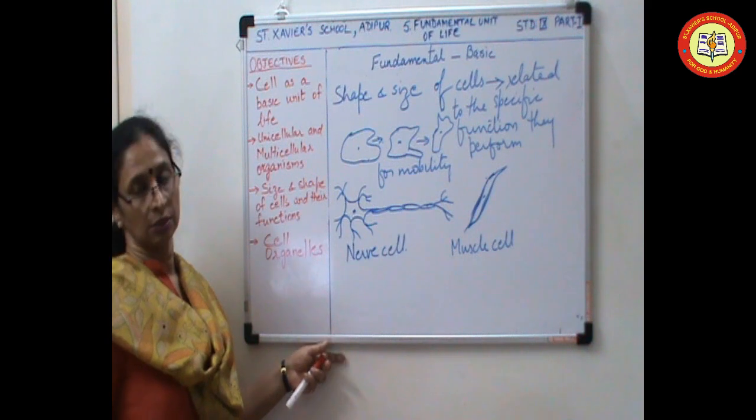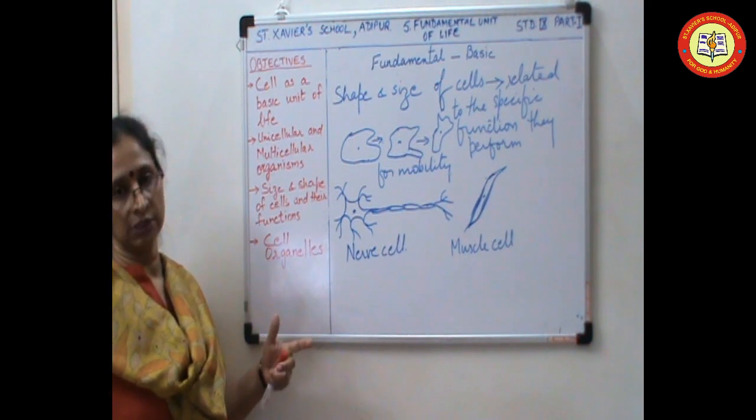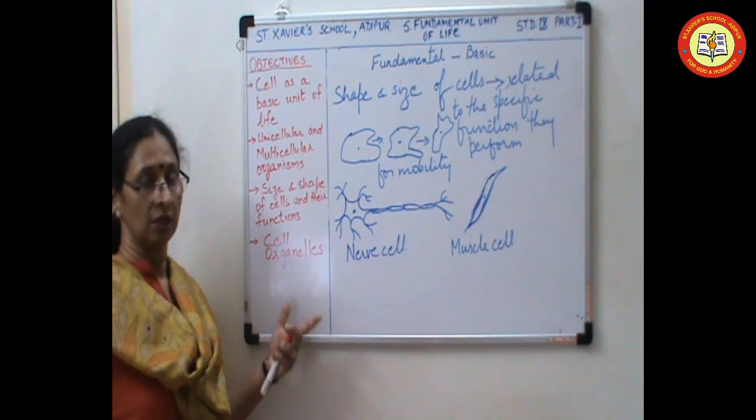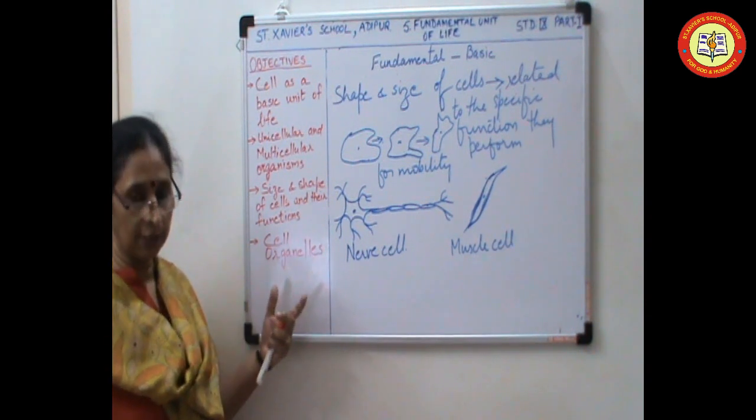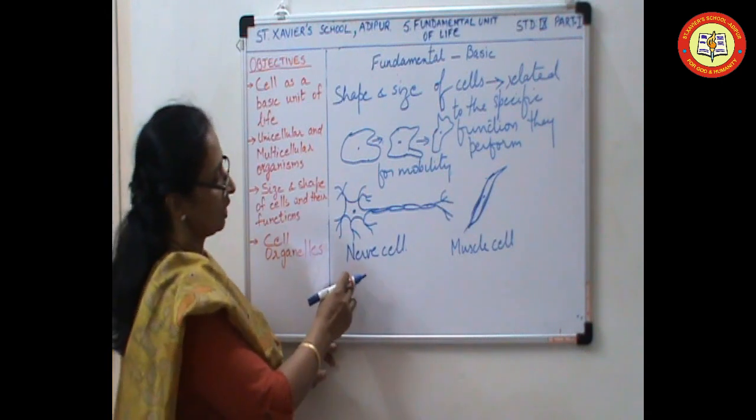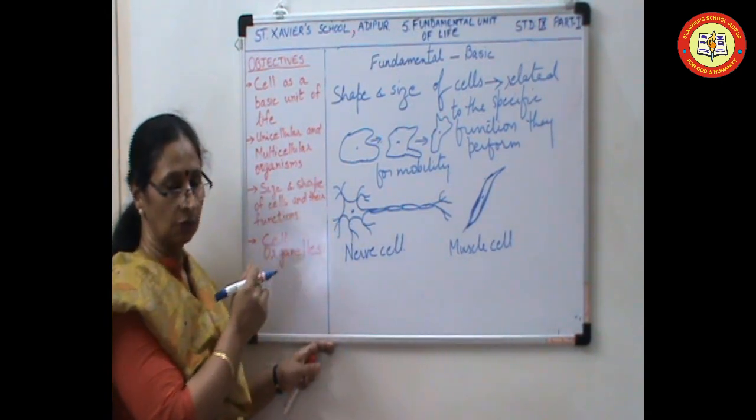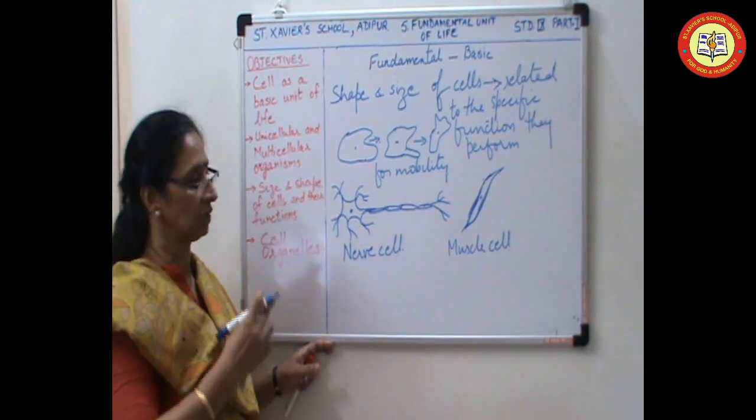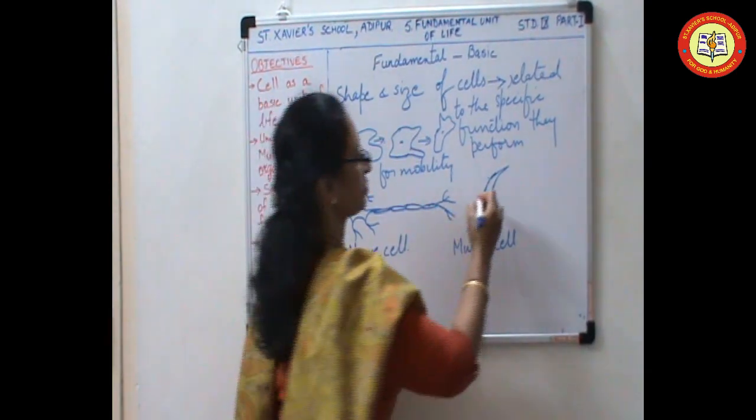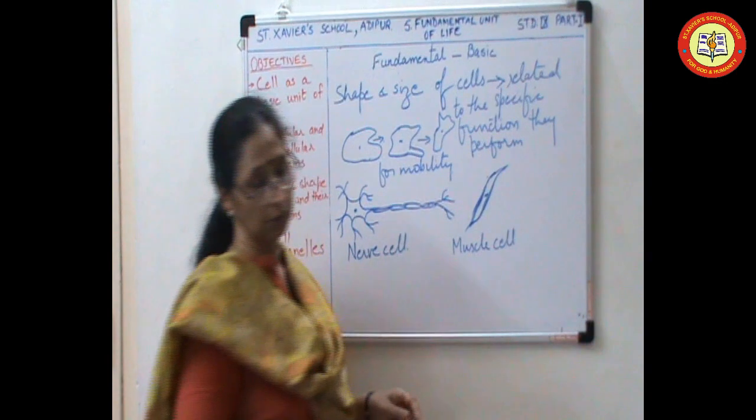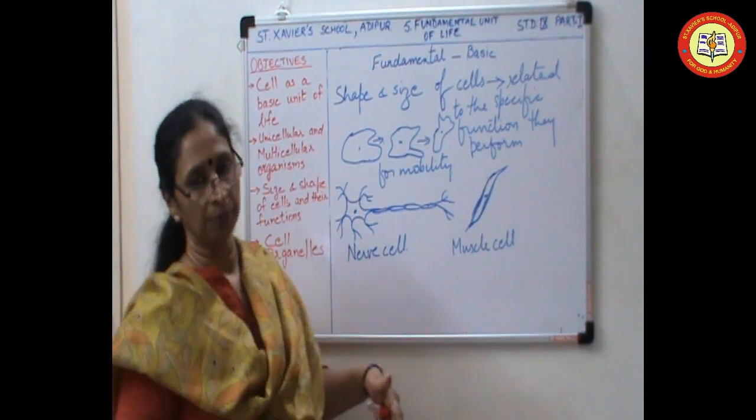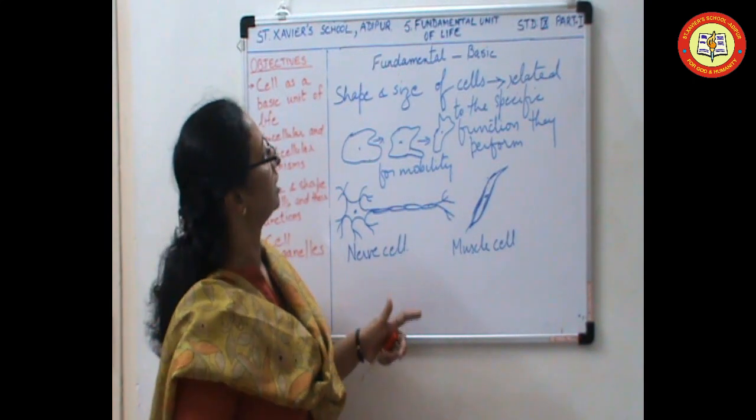And that means it does not have fixed shape. Nerve cells, muscle cells, bone cells, blood cells. These are a few examples for the cells that have fixed shape. Nerve cells, they perform the function of transmission of nerve impulses. So they have fixed shape. Muscle cells, they contract and relax. And so these are the example of fixed shape cells.